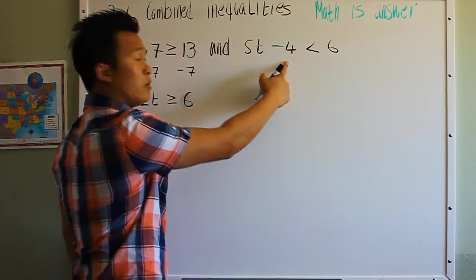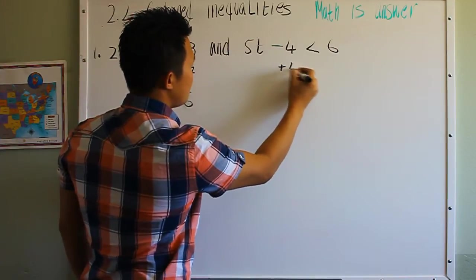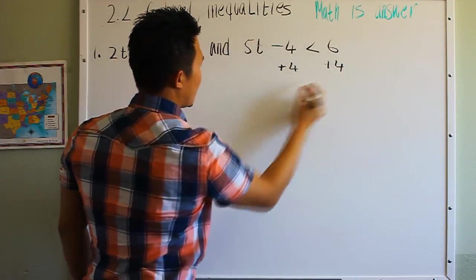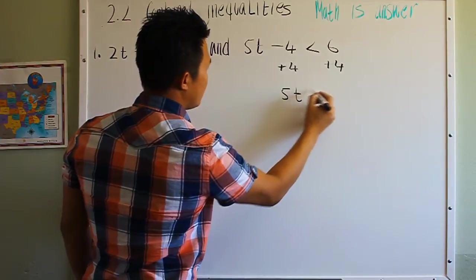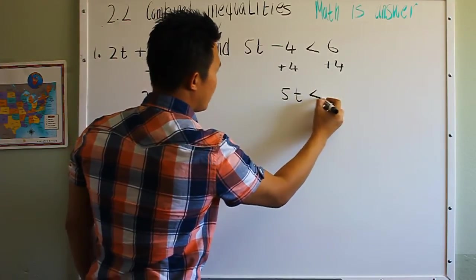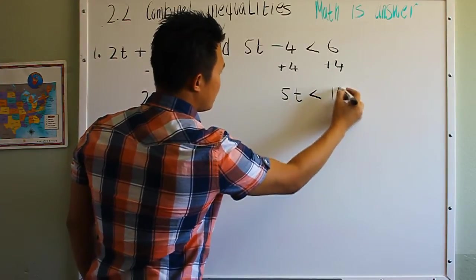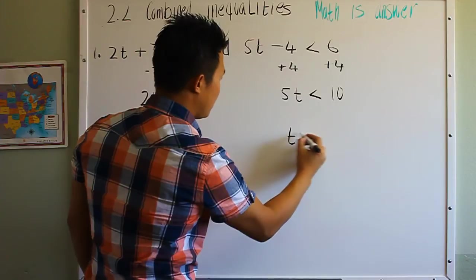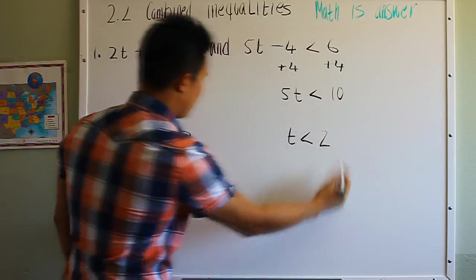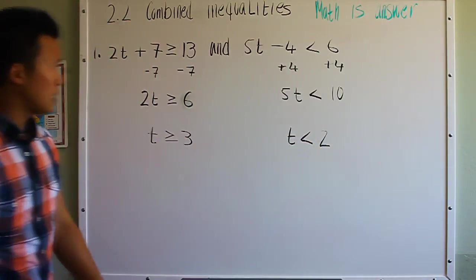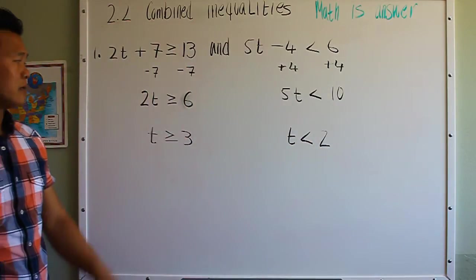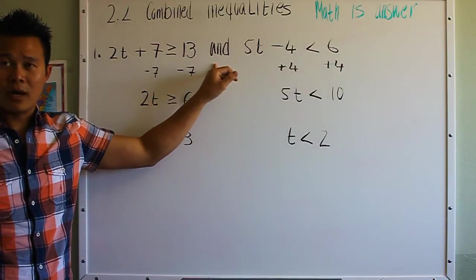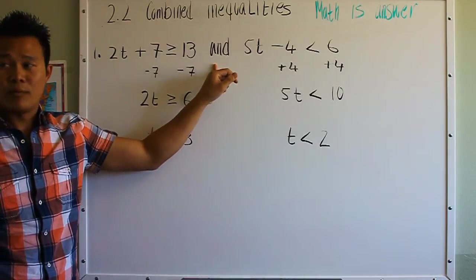Do the same thing to the second inequality. Add 4 to both sides, giving 5t less than 10. Divide both sides by 5, so t is less than 2. Here's a common mistake: make sure you bring down the word 'and', otherwise it will be wrong.